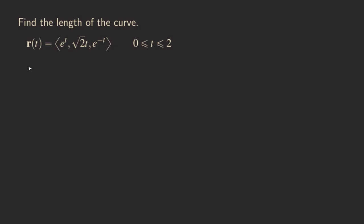First, we need to find r', which you can also think of as the velocity function for the motion of the object moving along this curve. We take the derivative of each of the components. Taking the derivative of e^t, we still just get e^t. Taking the derivative of √2 · t, the √2 is just a constant in front of t, so the derivative of t is 1 and we get √2. And then for the last component we get e^(−t), and by the chain rule we multiply by the derivative of the exponent, which is −1.